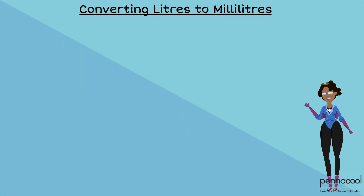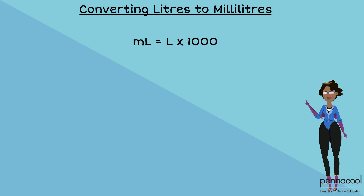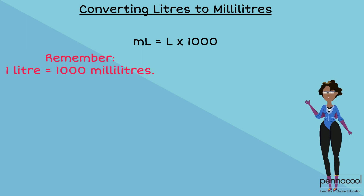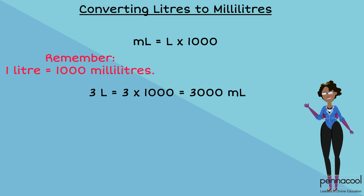When determining the capacity of containers in milliliters, we take the capacity in liters and multiply by 1000. One liter is equal to 1000 milliliters. Three liters is equal to 3000 milliliters.